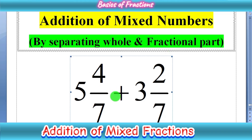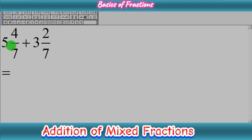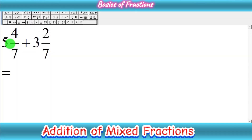Let's start. Today we have the first case: whenever we have same or like denominators. We have to add mixed fractions by the method of separating the whole and fractional part. Our question is 5 whole 4 upon 7 plus 3 whole 2 upon 7.